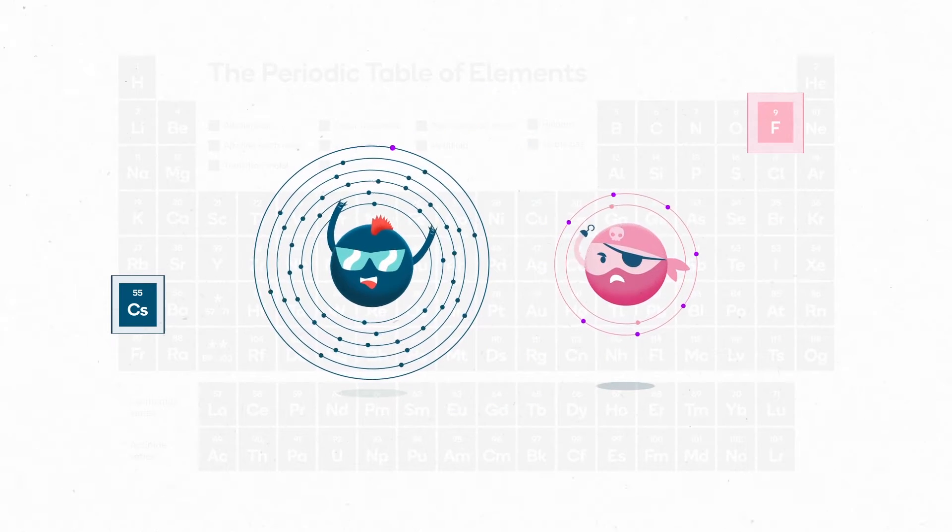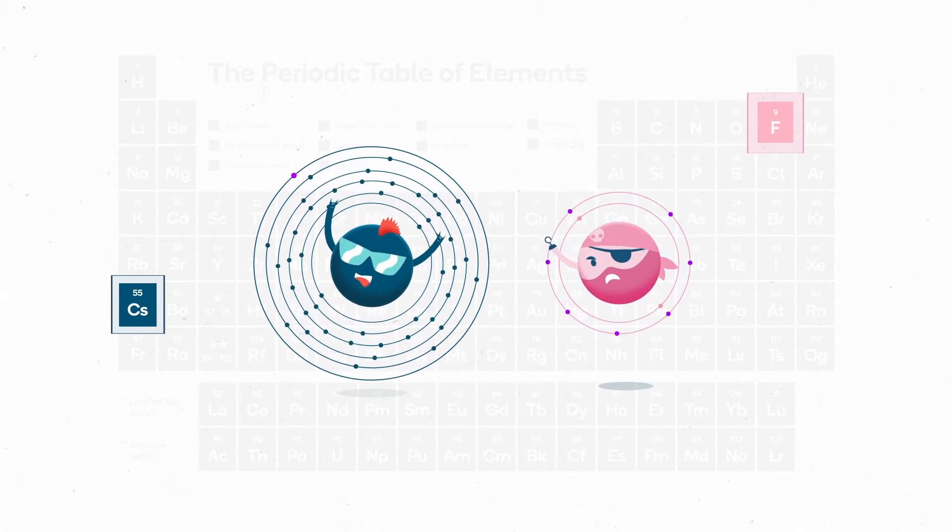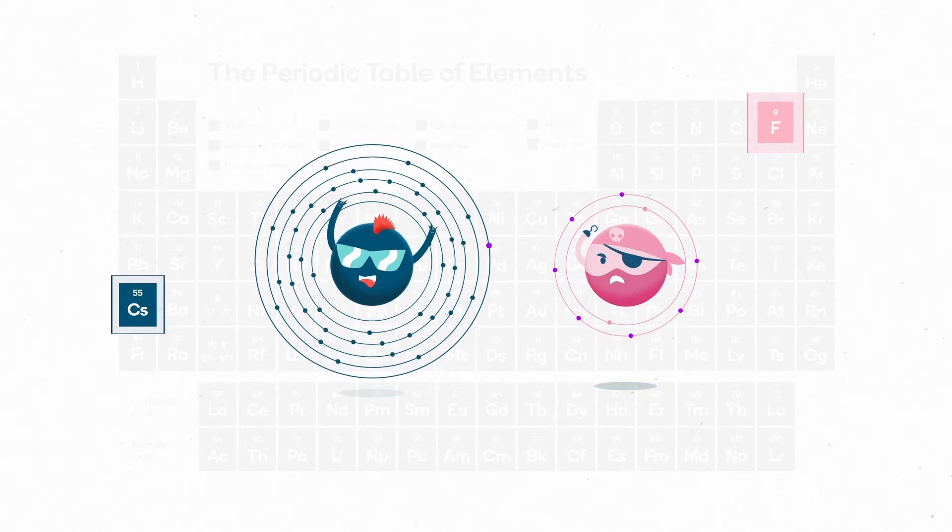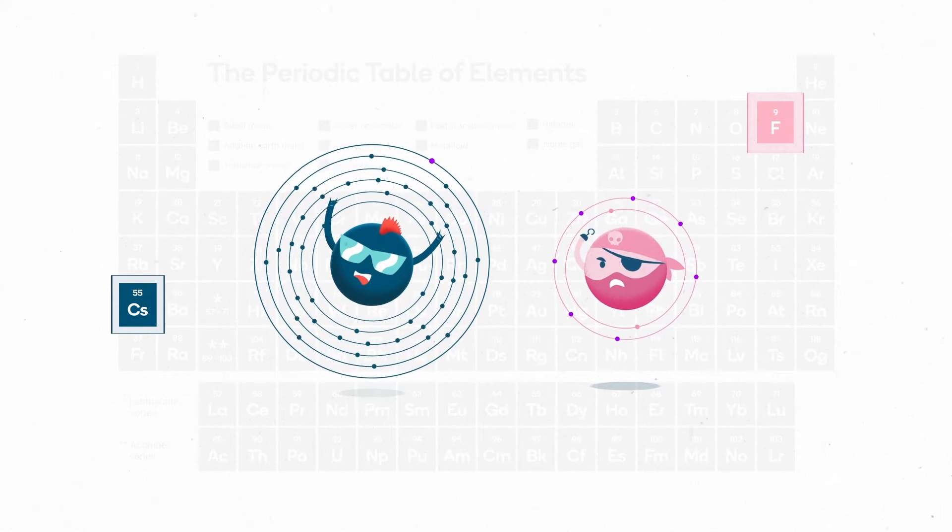But another super reactive element is fluorine in the opposite corner of the periodic table. It doesn't have one or two valence electrons it can easily give away, nor does it have lots of electron shells. So why is it so reactive?